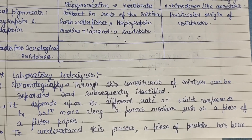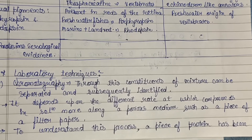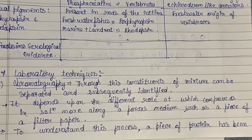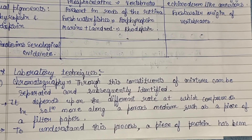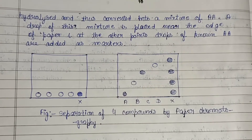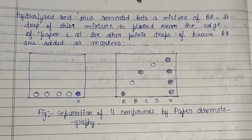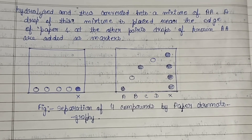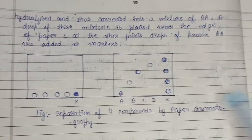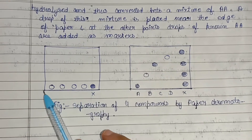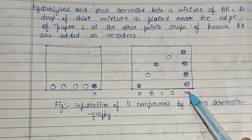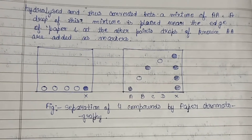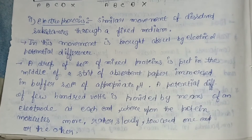The first technique is chromatography, through which constituents of a mixture can be separated and subsequently identified. It depends on the different rates at which compounds in a solution move along a porous medium such as filter paper. For example, a piece of protein is hydrolyzed and converted into a mixture of amino acids; a drop of this mixture is placed near the edge of the paper, and drops of known amino acids are added as markers. Separation of four compounds is shown by paper chromatography in the diagram.